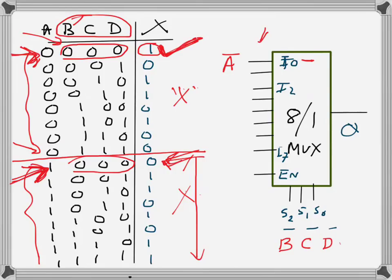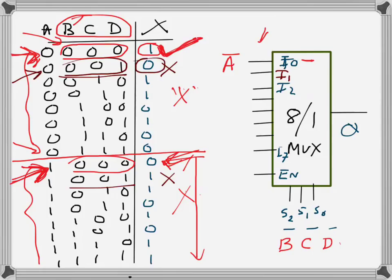Next, when BCD is 001, i1 is selected. Looking at the truth table for BCD=001: when A=0 the output is 0, and when A=1 the output is 1. Whatever the input is goes to the output, so I will connect just A to i1 — no inversion.